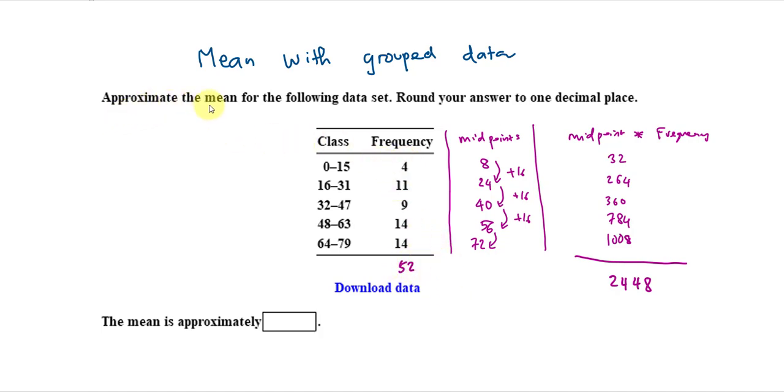Now, to approximate the mean, we take the sum of all the points here, which is 2448, divided by all of the frequencies, which is 52. If we divide 2448 by 52, we should get around 47.07. And we can round it to one decimal place, which is 47.1. And this is how we find the mean for grouped data.